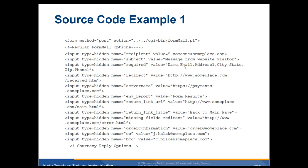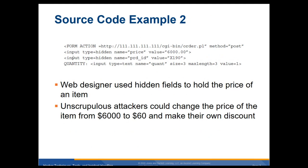In the source code you can actually see addresses and possibly database information. For example, there's a hidden input field with a price of $6,000 — web designers use hidden fields to hold the price of an item. If you go in and change the HTML code from 6,000 to 60, you can get a significant discount.